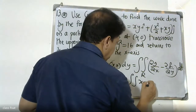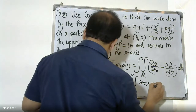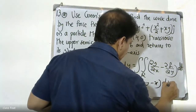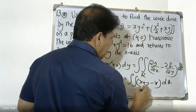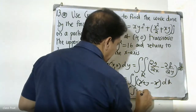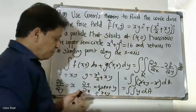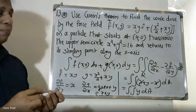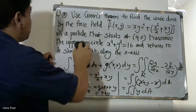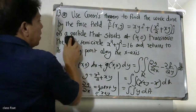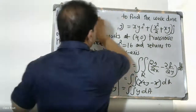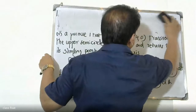So ∂g/∂x − ∂f/∂y = (x + y) − x. The x terms cancel out, leaving just y. Therefore the double integral reduces to the double integral over R of y dA.